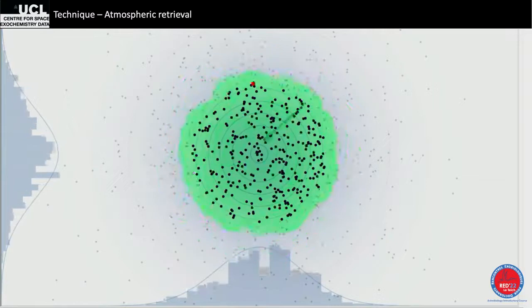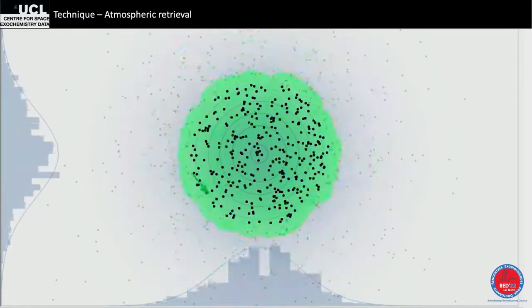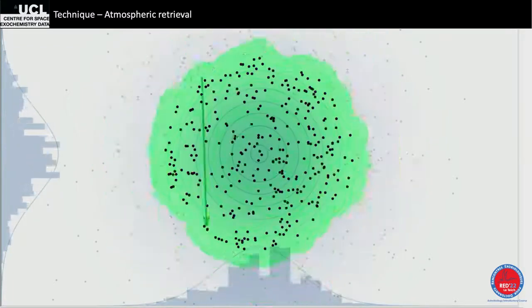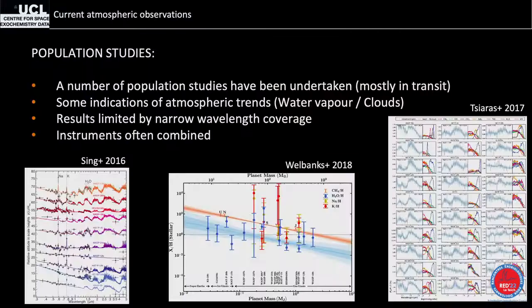Population studies of 30 planets analyzed simultaneously show that most hot Jupiters have water at 1.4 microns and are also cloudy. Looking at populations instead of single planets is most interesting for building statistical trends. There are also hints of trends with refractory elements, though this is speculative.